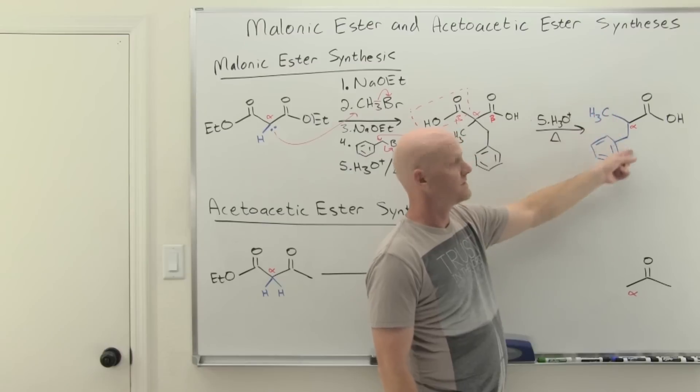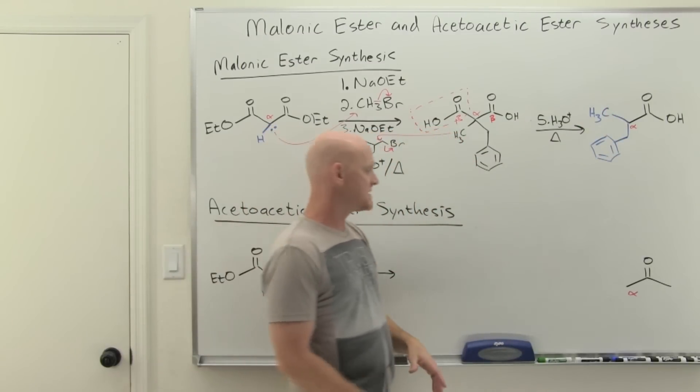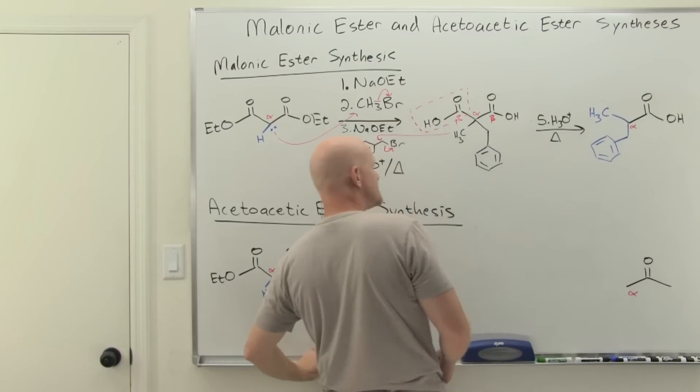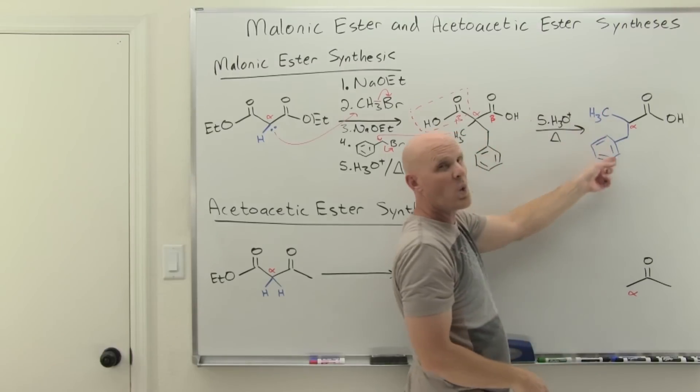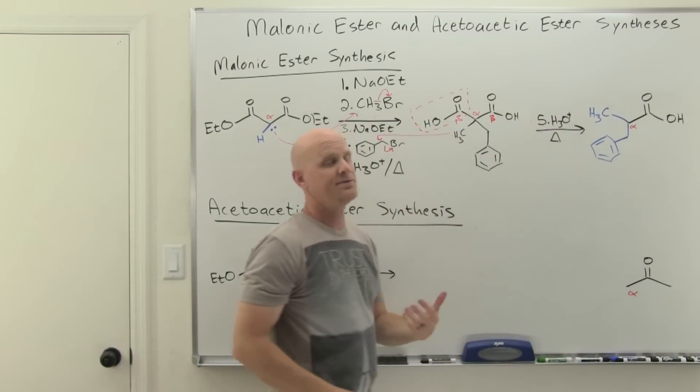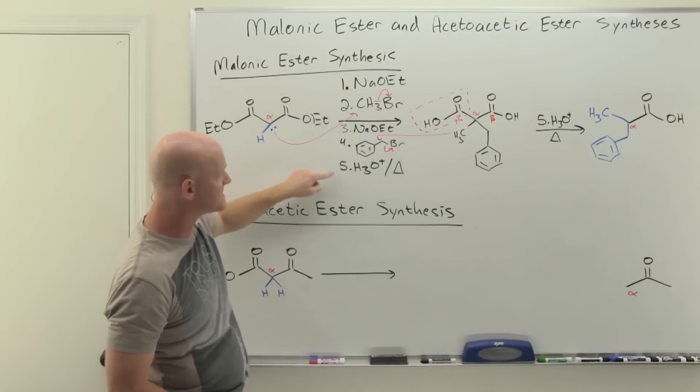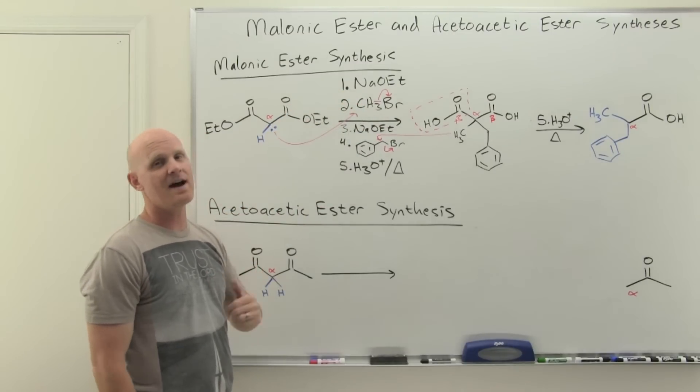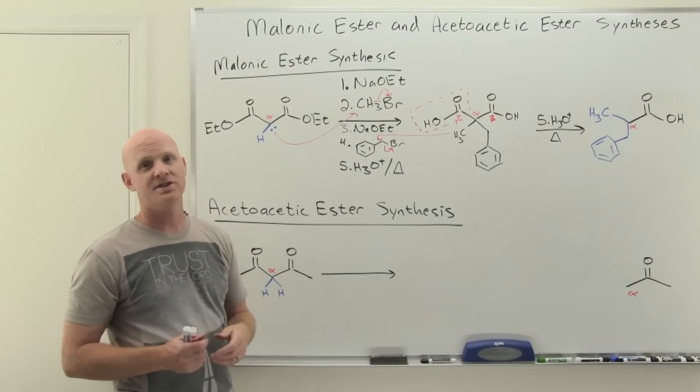And so we just made a carboxylic acid. And again, the key was what two alkyl groups were attached at that alpha carbon. So sometimes we say that this makes substituted acetic acid molecules. So that's acetic acid, and you can attach either one or two alkyl groups to it. If you only wanted to attach one, well, then you just take off steps three and four and jump straight to H3O plus and heat after step two. But if you want to attach two, you have the option of attaching two.